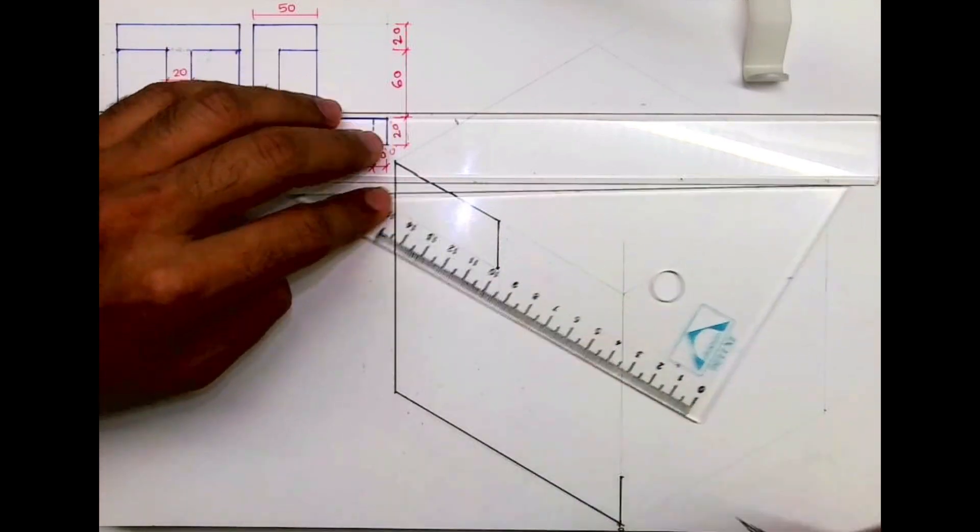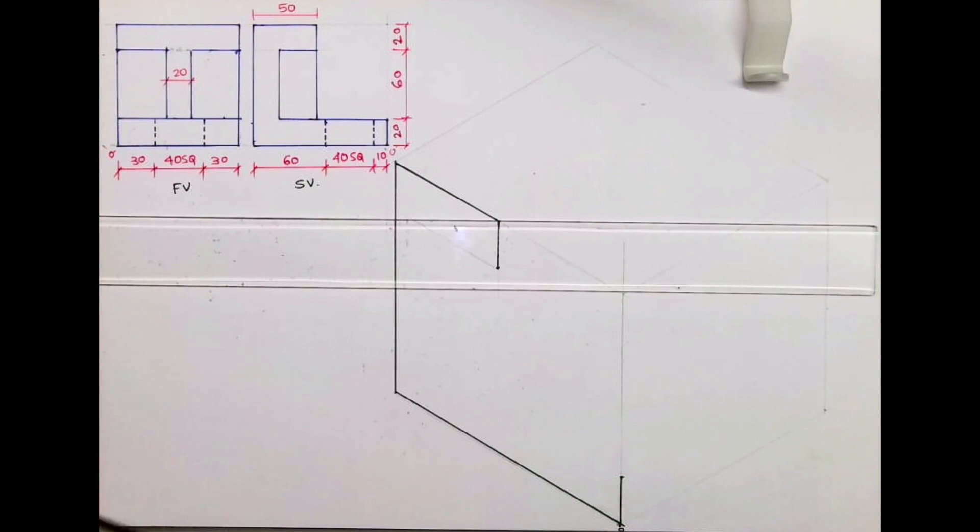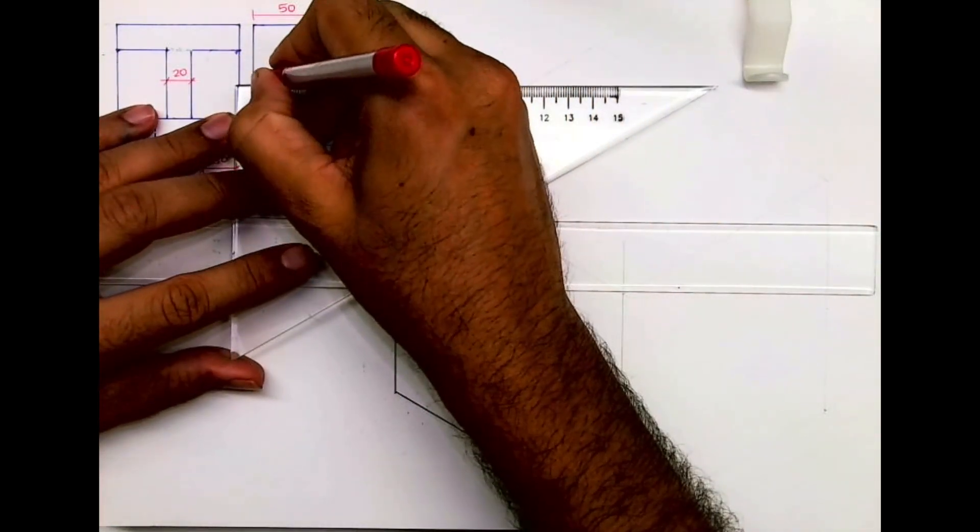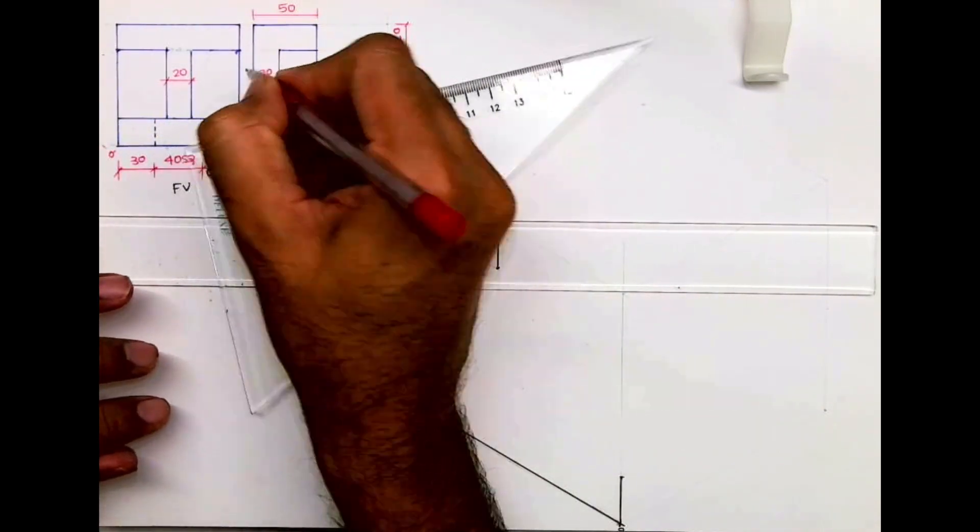Then I will draw a line inside. How much it will go inside? This width is 20, so it will go inside by 30, 50 minus 20.